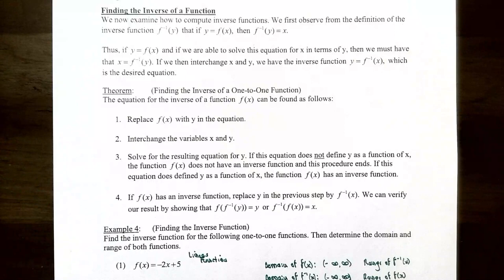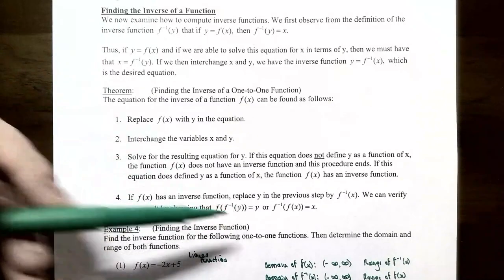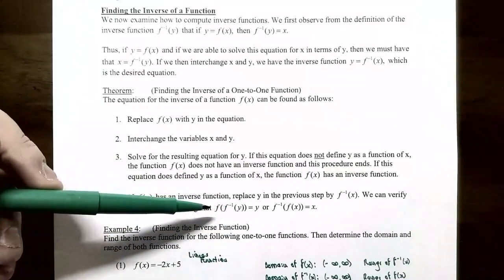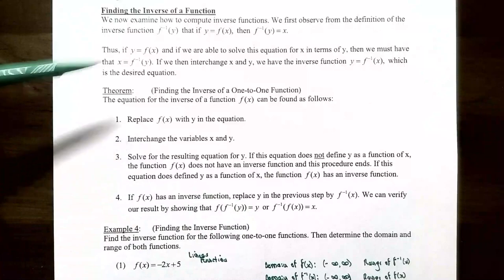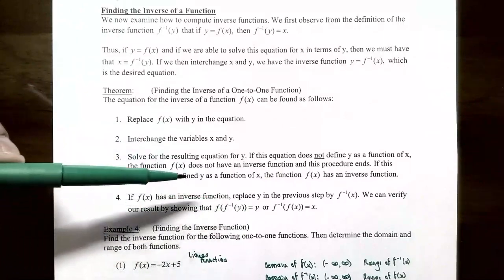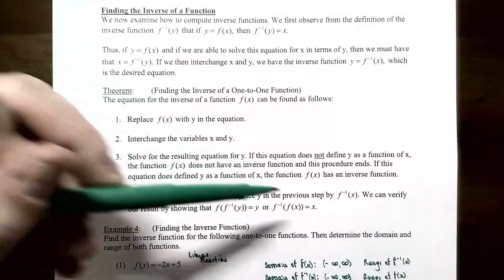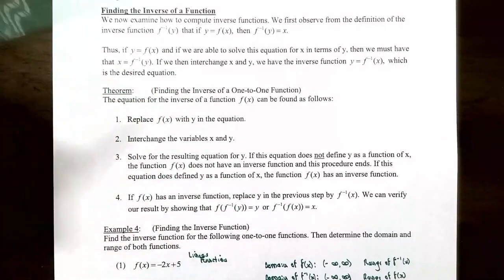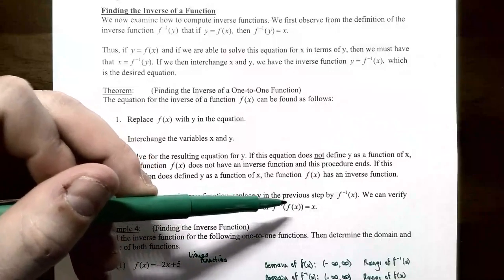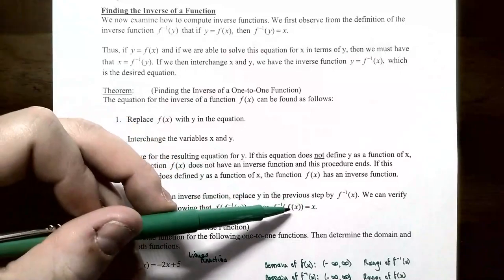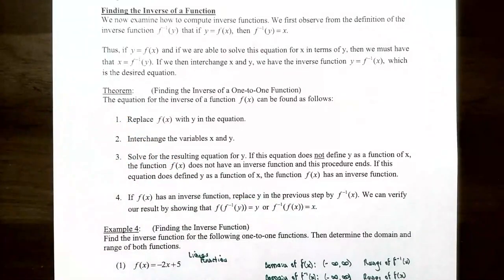Step four: you can always check your answer just like we did in the previous video. If you do composition of the function and its inverse, you should always get back the variable you input. If you input y into your inverse function first and then substitute that value into f, you get y back. And if f inverse is the outside function and f of x is the inside function, you input x, get an output, and then the inverse sends it back to x — so you input x and output x after composition.